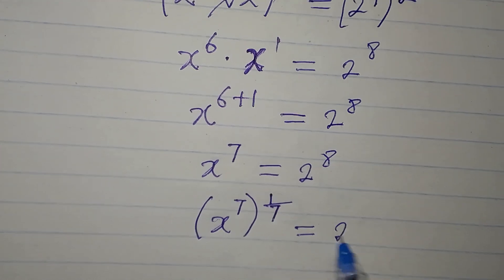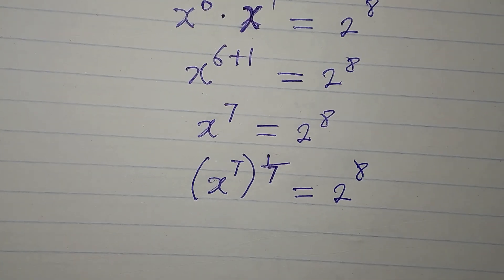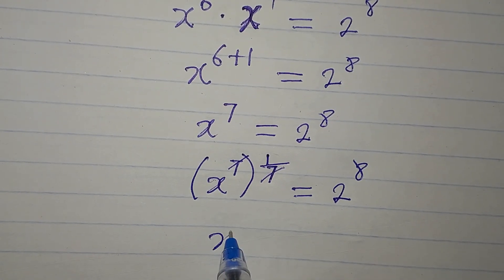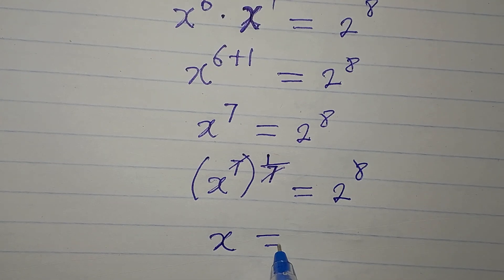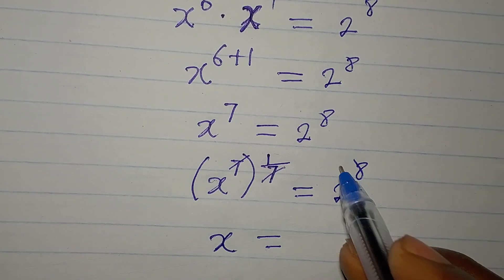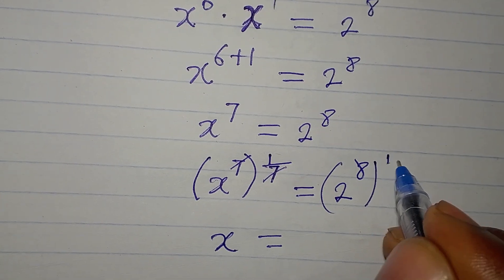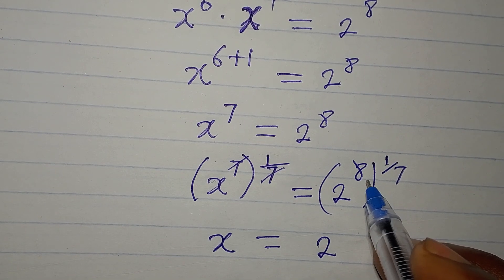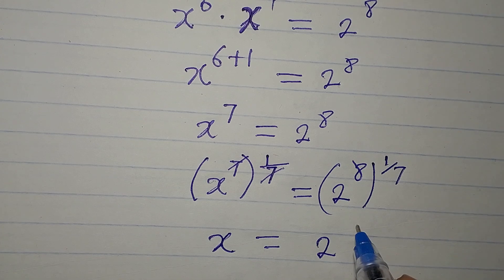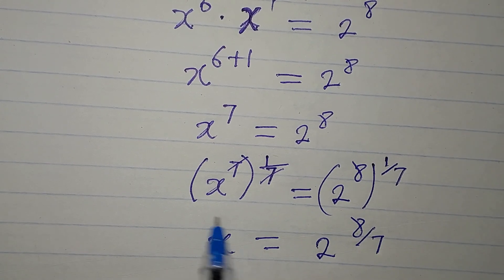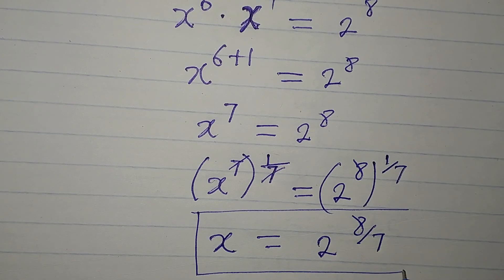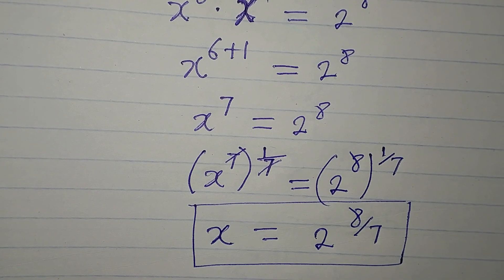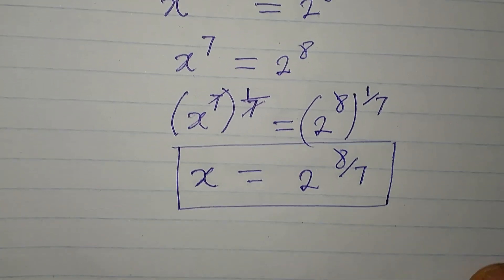Raising both sides: on the left, the power of 7 and 1 over 7 cancel so x is free. On the right, 2 to the power of 8 raised to 1 over 7 gives 2 to the power of 8 over 7. So the value of x from the first method is 2 to the power of 8 over 7.